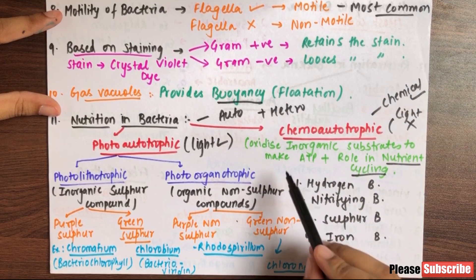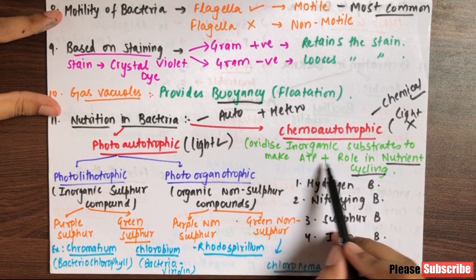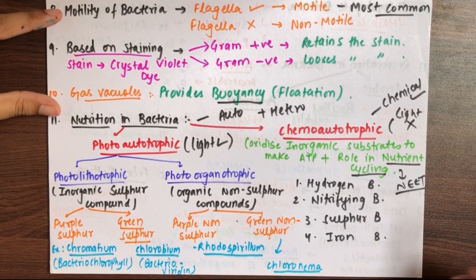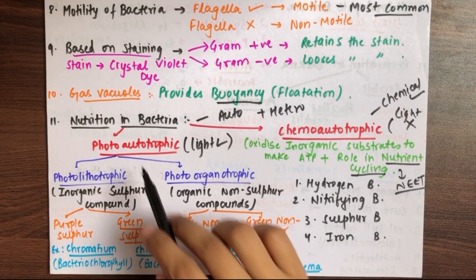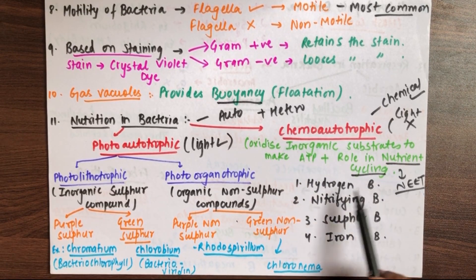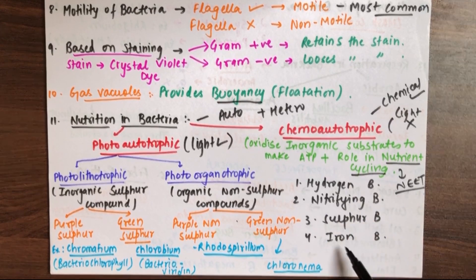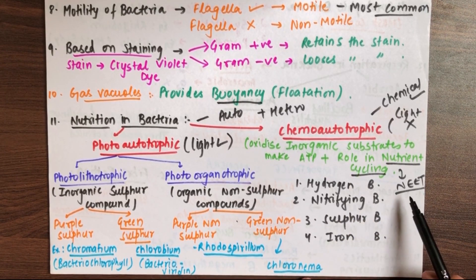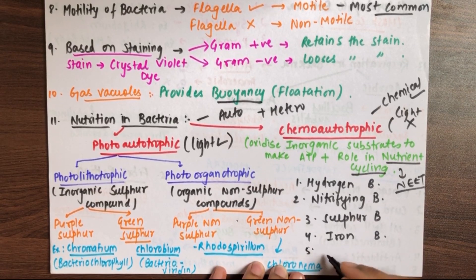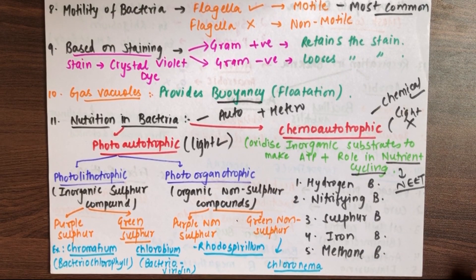Chemo-autotrophic bacteria oxidize inorganic substrates to make ATP, and their role is in nutrient cycling. This is a NEET question: what is the major role of chemo-autotrophs? Their role is in nutrient cycling through inorganic substrates like hydrogen, iron, sulfur, and nitrogen. Based on these, we have hydrogen bacteria, nitrifying bacteria, sulfur bacteria, iron bacteria, and methane bacteria.